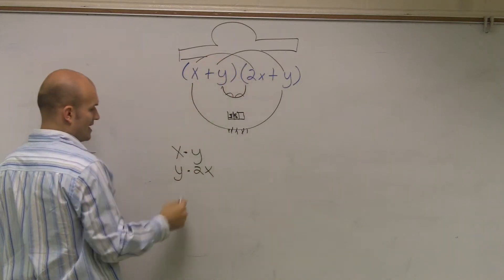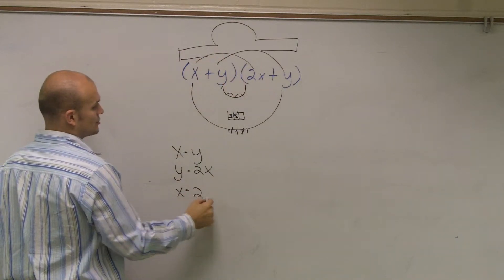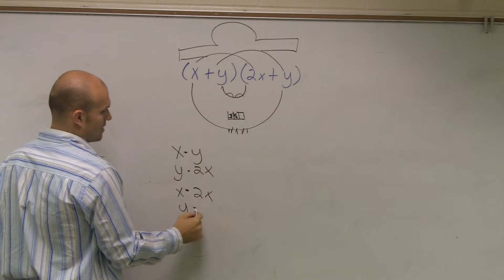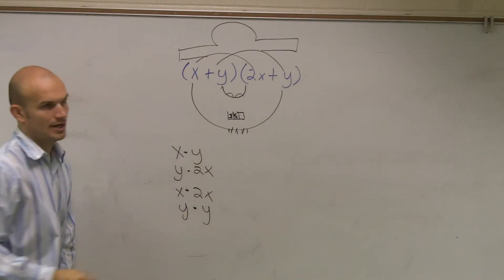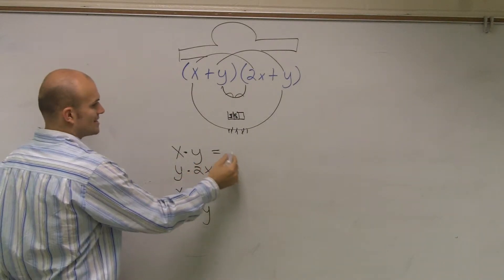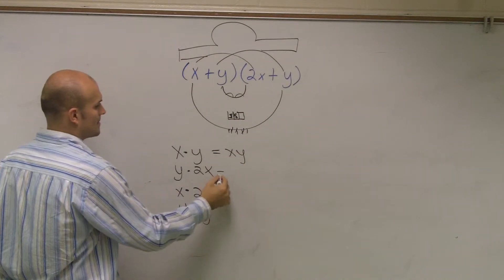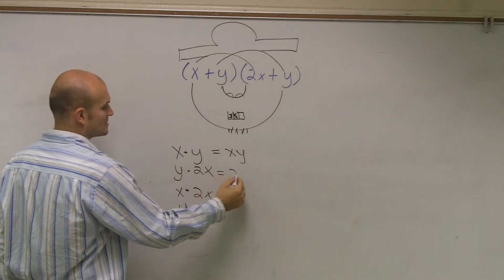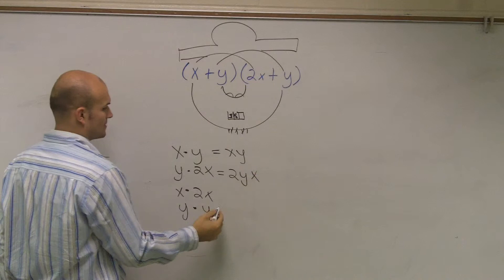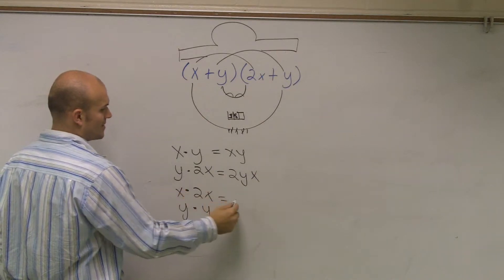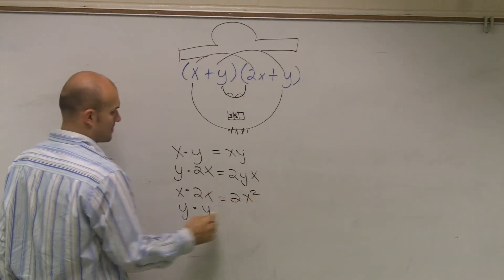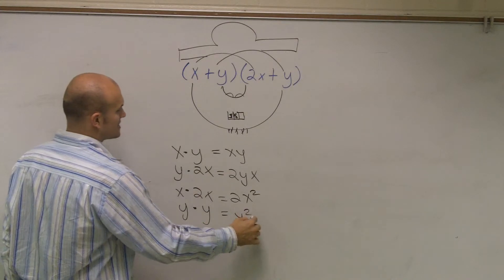one piece of hair, x times 2x, the other piece of hair, y times y. Okay, and then you just equal them. x times y is x times y. y times 2x is 2yx. x times 2x is going to be 2x squared. y times y is y squared.